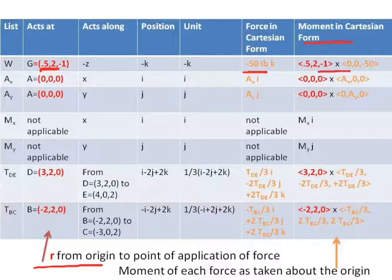So the moment at the origin due to W is the cross product of 0.5i plus 2j minus k and minus 50k. Once you have these, this is the moment of each force taken about the origin, then you're all ready to go.